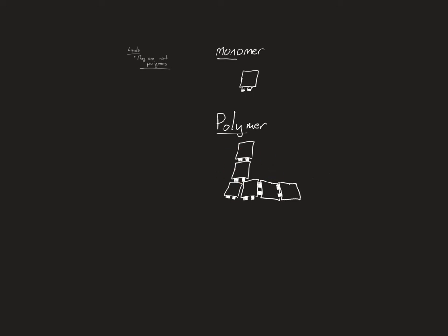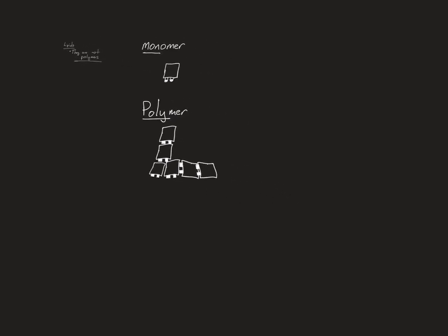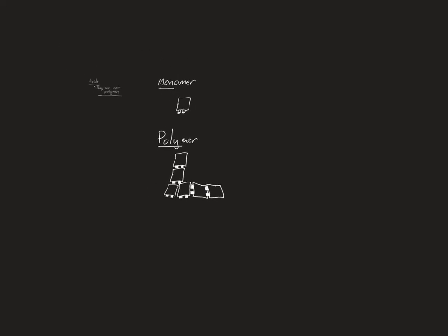Legos are really a good example because you can take one single one and put them together and you can produce a polymer. These are different structures and the structures can have different functions. If you want to make a crane, you can make a crane out of Legos. You can make robots out of Legos.